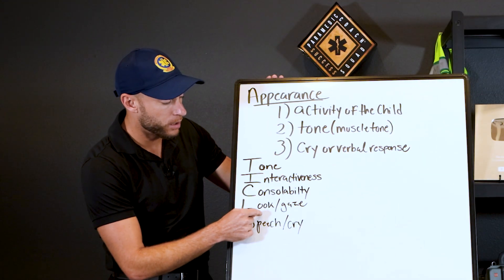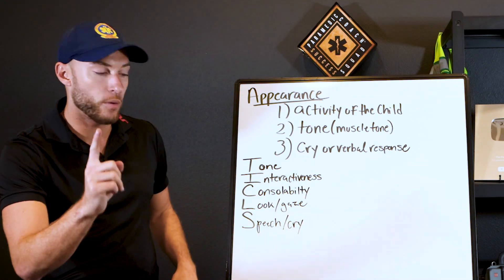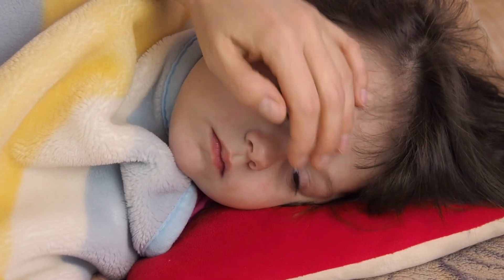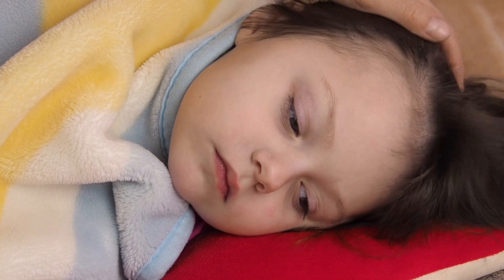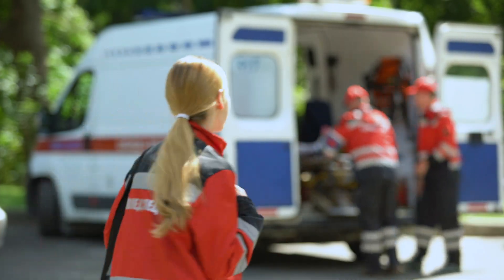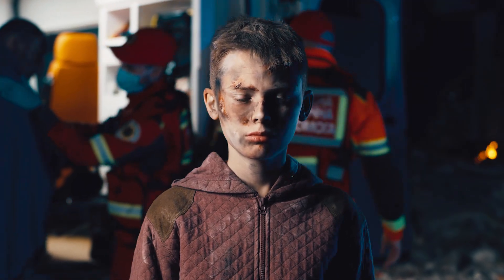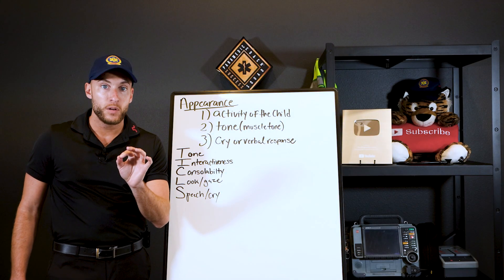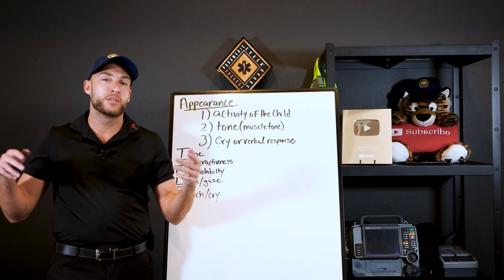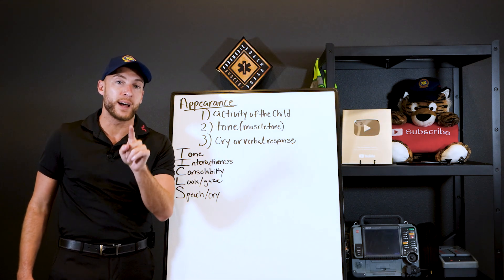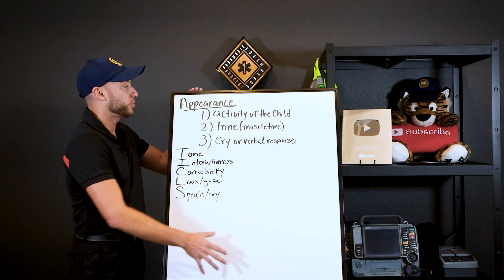L is the look — what is the gaze of the patient? And S is speech or cries. Now, one pro tip with pediatrics: a sick child doesn't care if you're there. You're a stranger walking into their life and home — they should be tracking you and all your movements. If they're not watching you and they just don't care at all, letting you do whatever exams you want, that is a sinister sign in young children, and that's part of our appearance assessment.